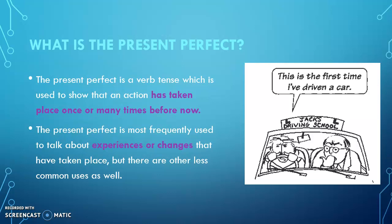Lo llamamos tiempo compuesto porque empezó en el pasado, no terminó en el pasado, y lo que pasó podemos verlo como un resultado visible ahora. Por ejemplo, en el pasado no habías tenido la oportunidad de manejar un auto, y esta es la primera vez que lo has hecho. La traducción al español sería: yo he hecho, yo he ido, yo he ganado, yo he visto, yo he conocido. Esa sería nuestra traducción para este tiempo. So these are the basic, main uses: an action that started in the past and continues up to now, and experiences or changes.